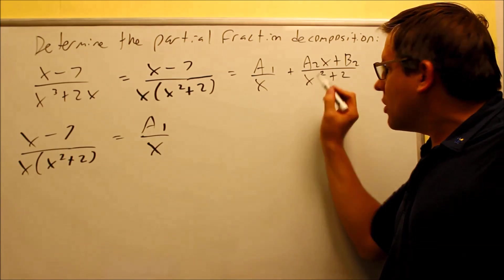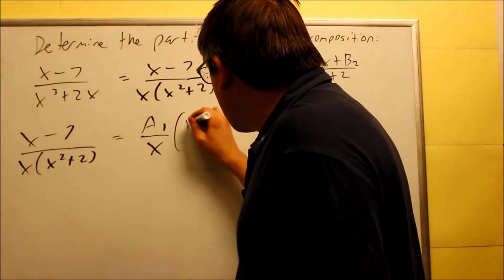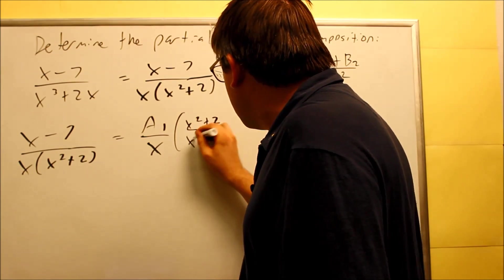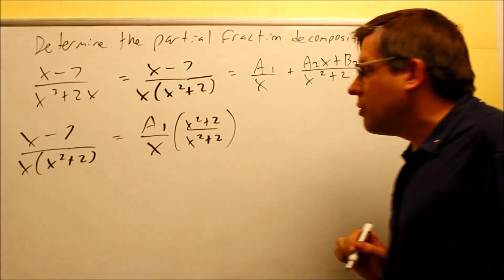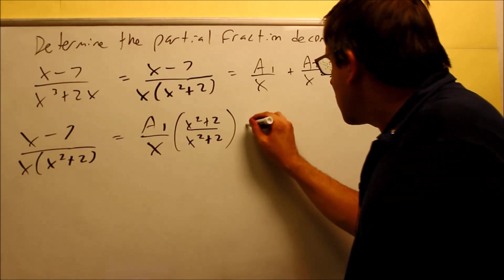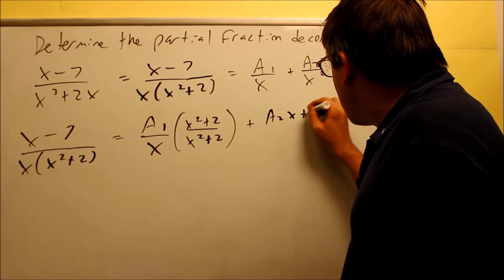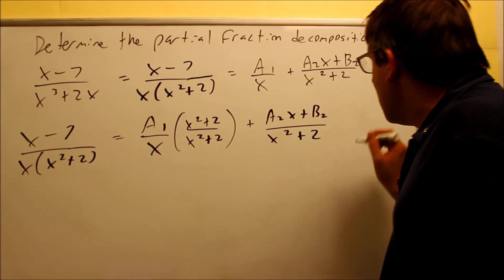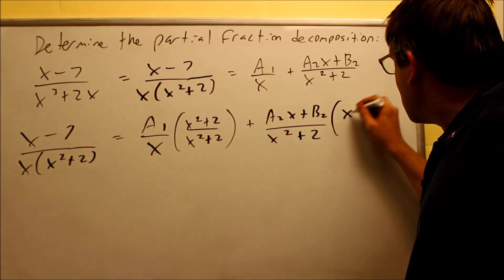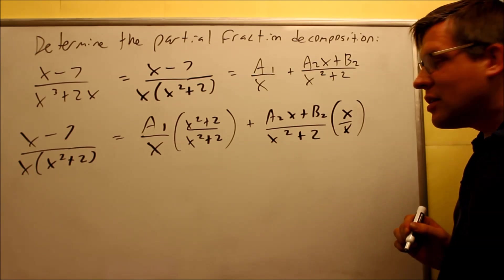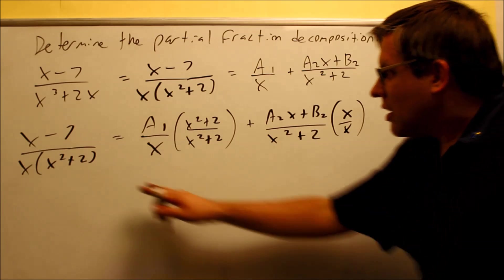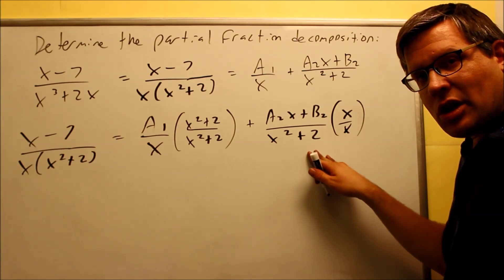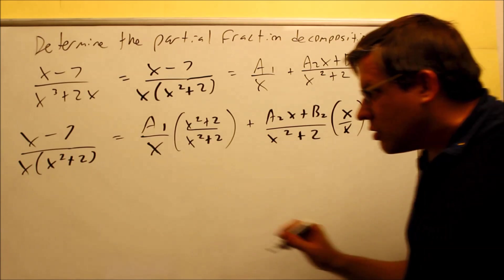So here's the first fraction. I'm missing the x squared plus 2. So I'm going to multiply top and bottom by x squared plus 2. This next one here, I have a2x plus b2 over x squared plus 2. This one is missing the x term, so I'm going to multiply top and bottom by x. Now we have all the denominators are the same. We're just going to set the numerators equal to each other.